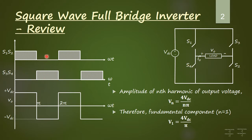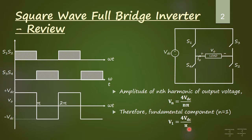Based on this switching scheme, the output voltage obtained is: from 0 to π, since S1 and S2 is on, the load voltage is plus VDC. From π to 2π, S3 and S4 is on, so the load voltage switches to minus VDC. The Fourier analysis of this waveform was already carried out in class. We obtained the amplitude of the nth harmonic of the output voltage to be 4VDC/nπ, where n is the order of the harmonic. So the amplitude of the fundamental component, substituting n equal to 1, is V1 = 4VDC/π.